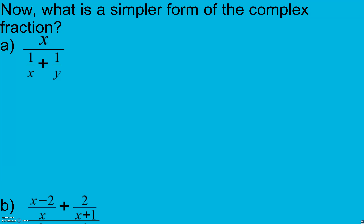When we simplify complex fractions, we need to simplify the numerator and simplify the denominator. My numerator is just an x — there's nothing else I can do there. For the denominator, I need to get a common denominator. I have an x and a y, so my common denominator is going to be the product of both of them: x times y.